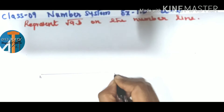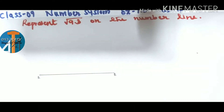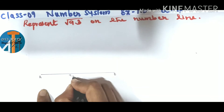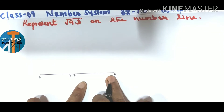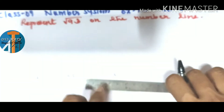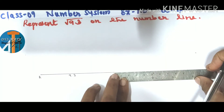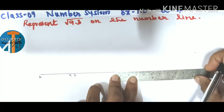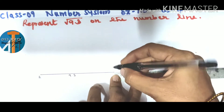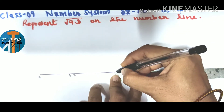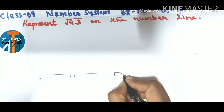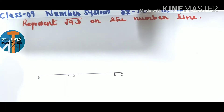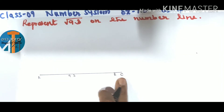Now extend this line from B by 1 centimeter. So keeping the scale at B, extend 1 centimeter — it becomes 9.3 plus 1, which is 10.3. Consider this new endpoint as C.